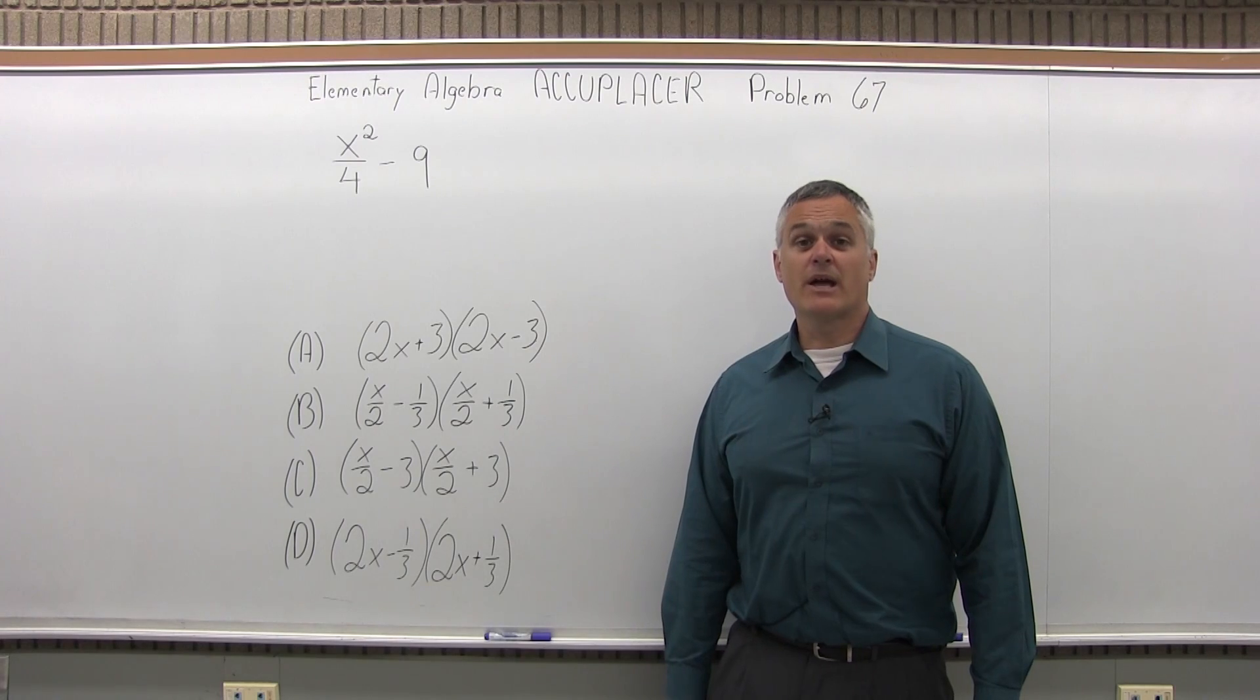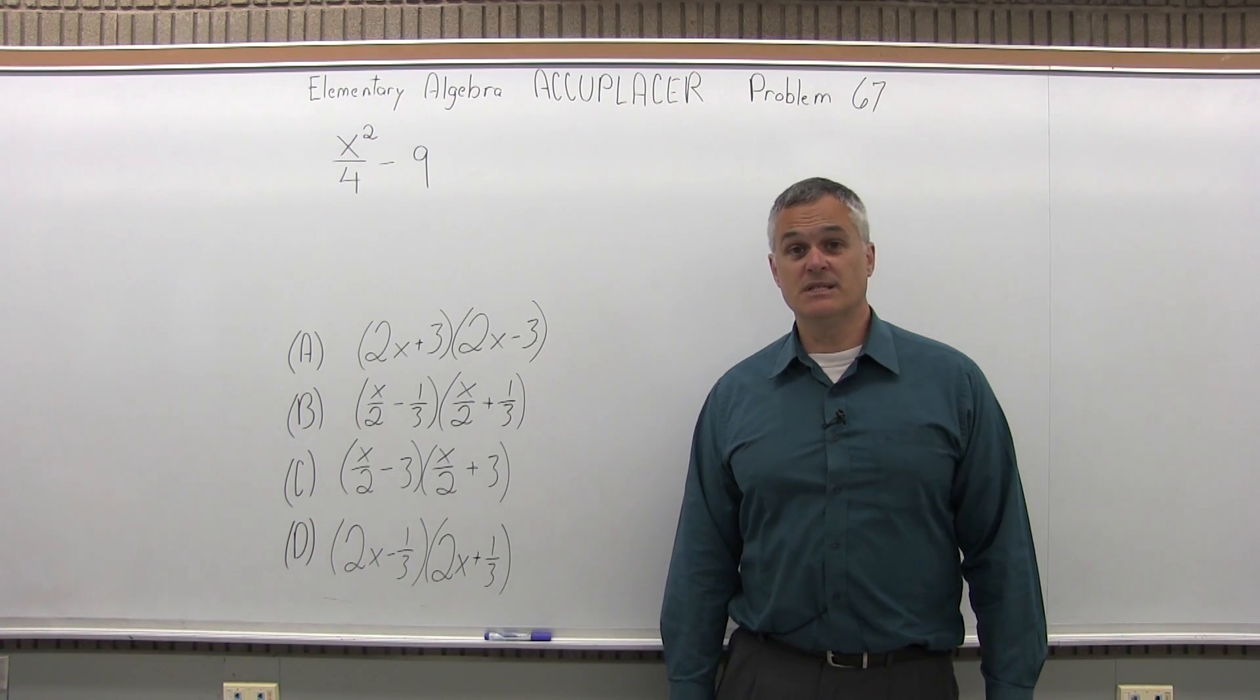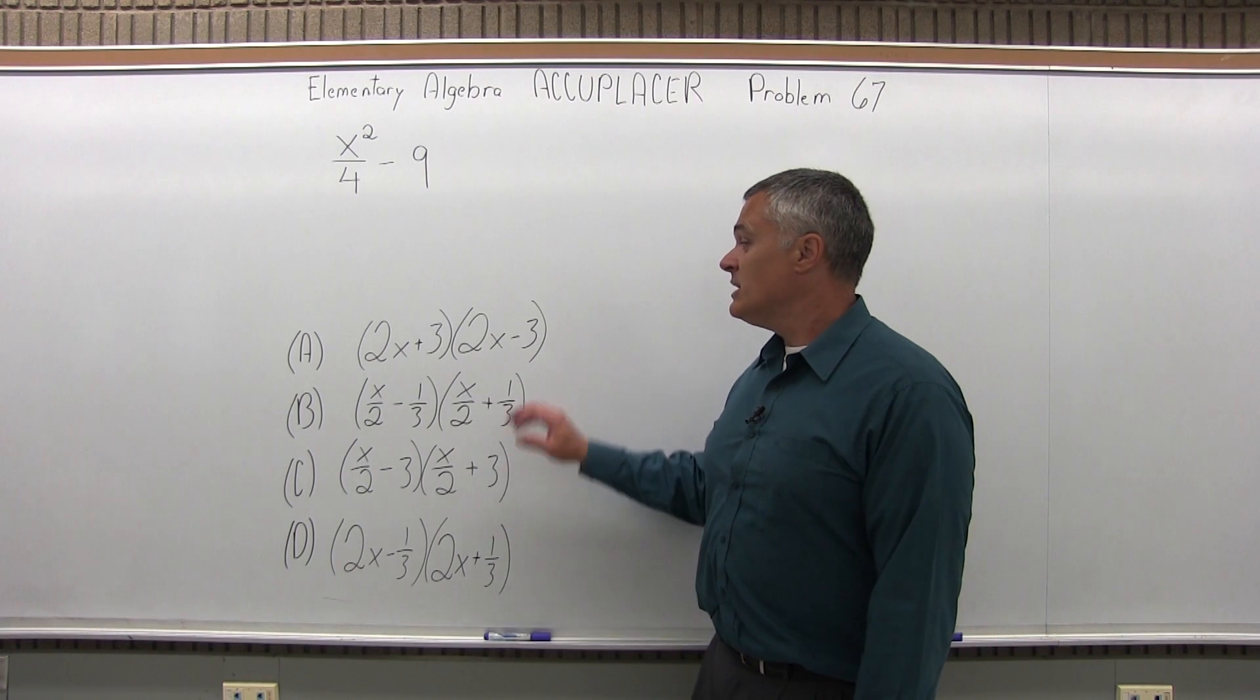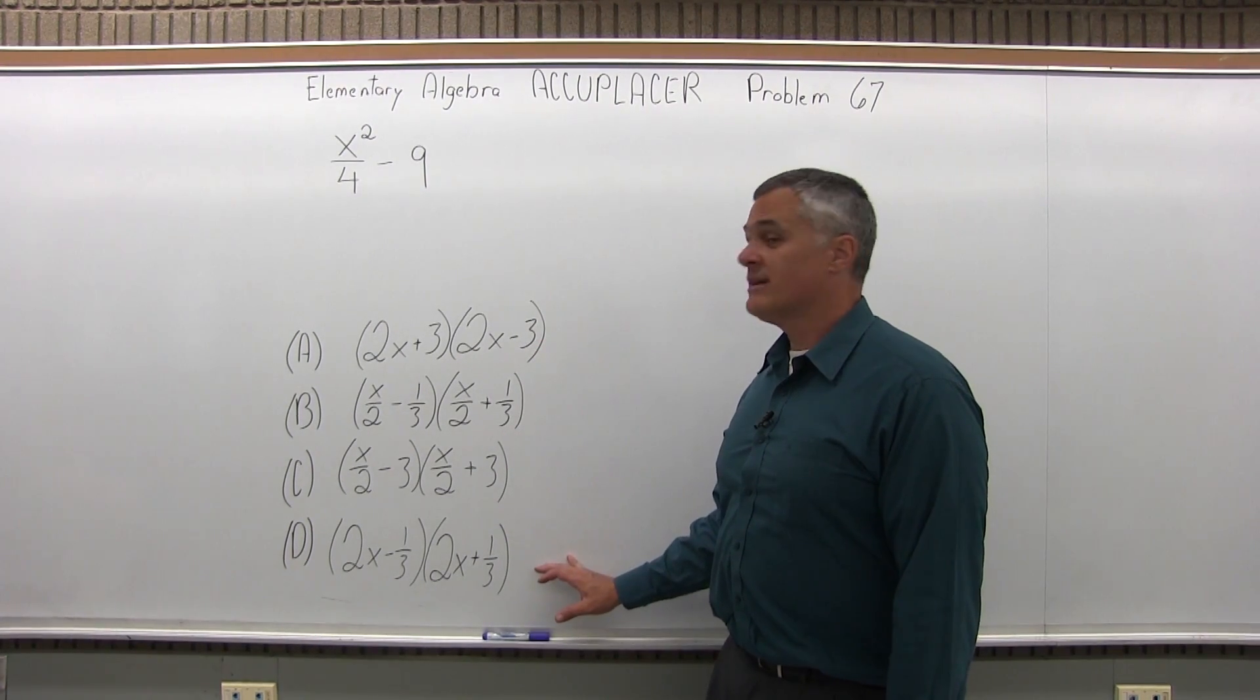This is the Elementary Algebra Accuplacer Review, Problem 67. We have x squared over 4 minus 9 equals which one of the four given options?